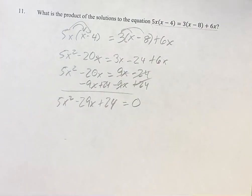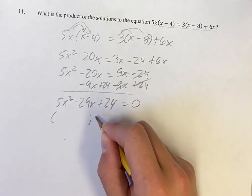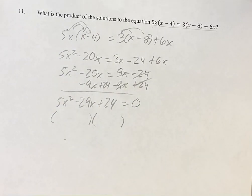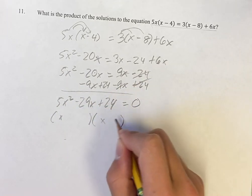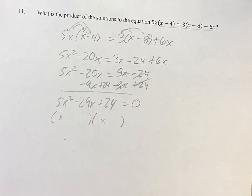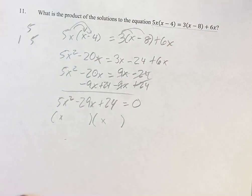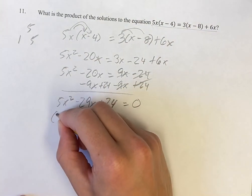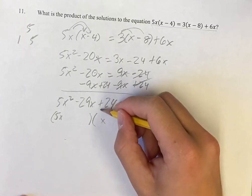We can use the quadratic formula, or we can try to find the factors. We're going to have (x ± something)(x ± something). These two x terms have to multiply to 5x squared. Since 5 is prime, the only integer factorization is 1 and 5, so one binomial starts with 5x and the other with x.